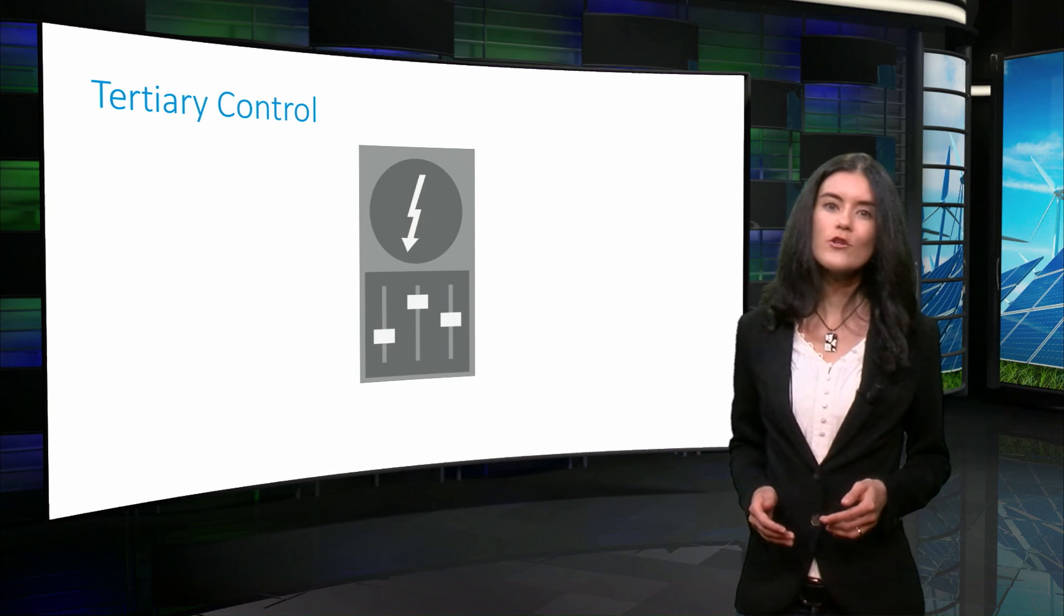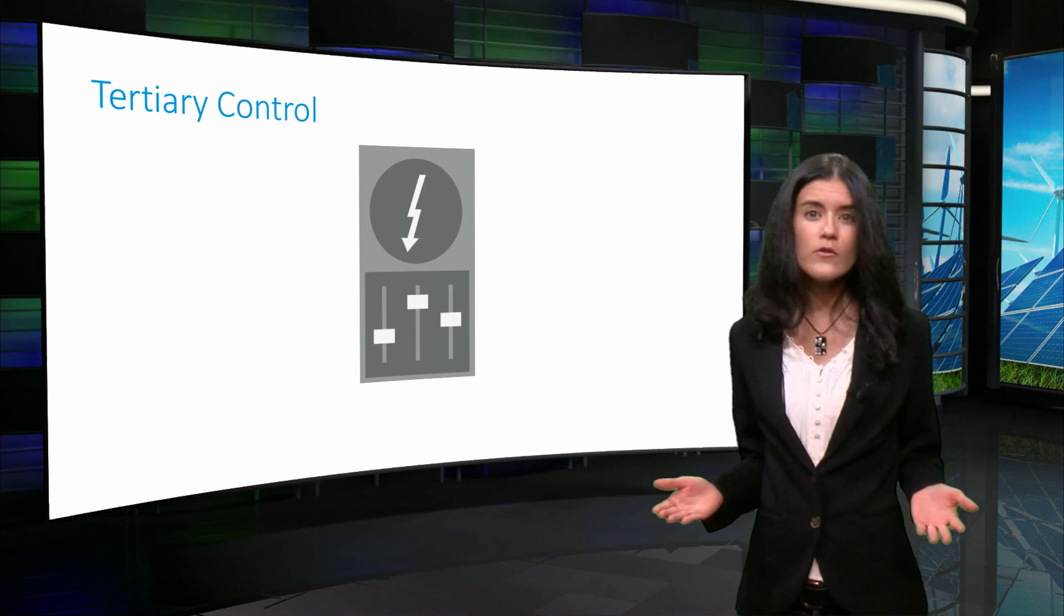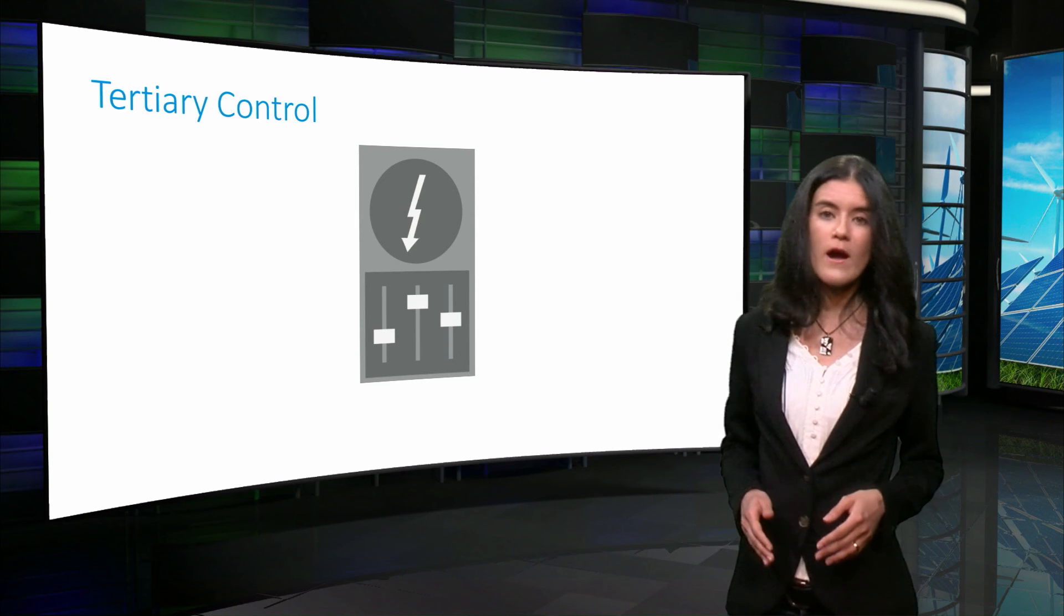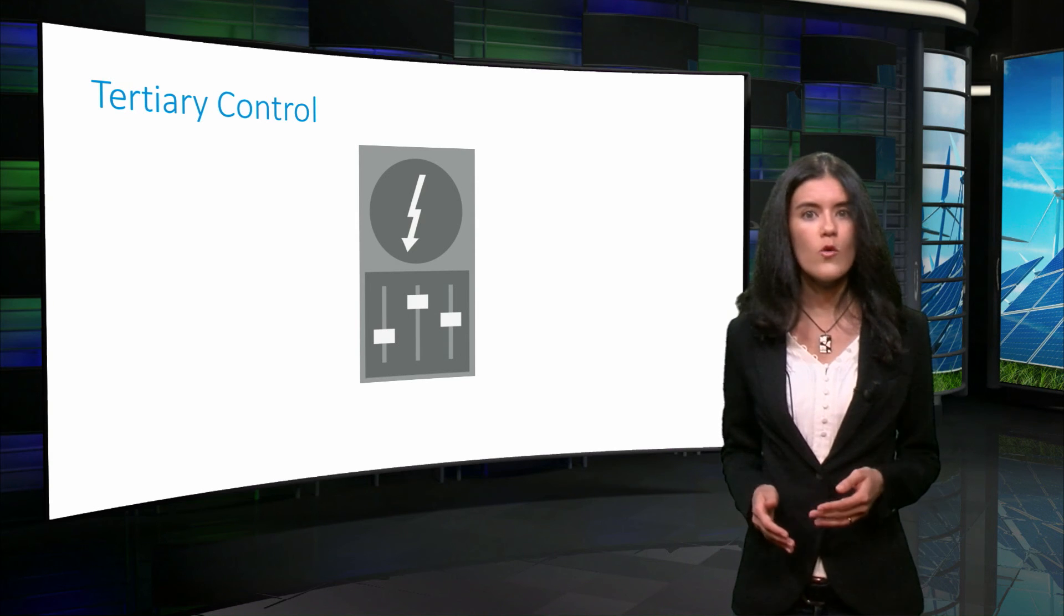However, this control works under a larger time frame, generally under a horizon of 24 hours. This control is known as tertiary control.